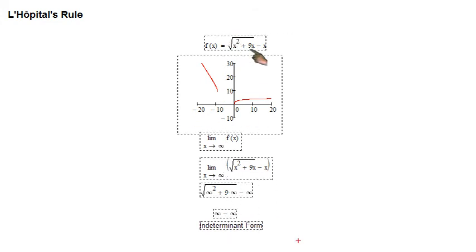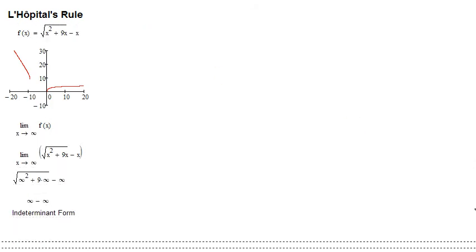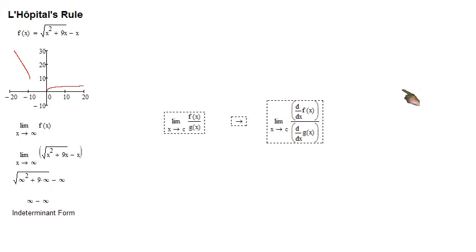So we need to apply what's known as L'Hopital's Rule. So what is L'Hopital's Rule? L'Hopital's Rule says that if you have the limit as x goes to some constant c of f of x divided by g of x, if the limit exists,